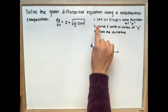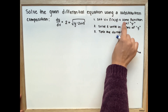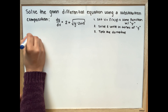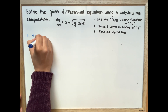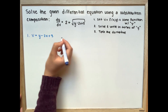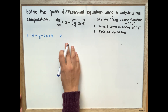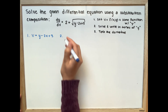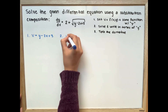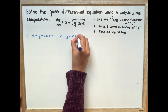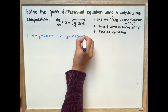First we're going to set v equal to some function with y. So our first step, v is equal to y minus 2x plus 3. For our second step, we're going to solve and write in terms of y. So y is equal to v plus 2x minus 3.